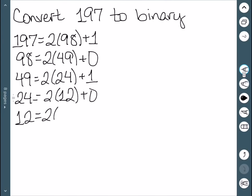12 divided by 2 is 6 with a remainder of 0. 6 divided by 2 is 3 with a remainder of 0. 3 divided by 2 is 1 with a remainder of 1.